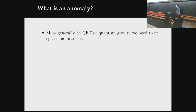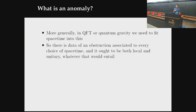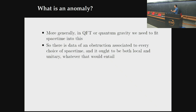We'd like to bring this concept from quantum mechanics into quantum field theory, quantum gravity, et cetera. We need to feed spacetime to the story. Associated to each choice of background spacetime manifold, we've got some sort of obstruction. It ought to be, like everything in quantum field theory, both local and unitary — which I have not and will not define right here. But this is some sort of function on spacetime manifolds that is local and unitary.